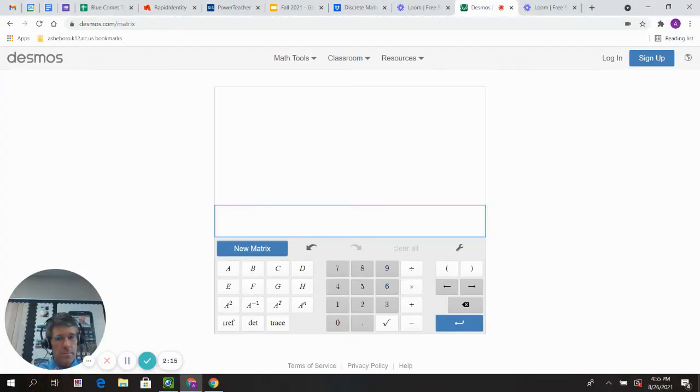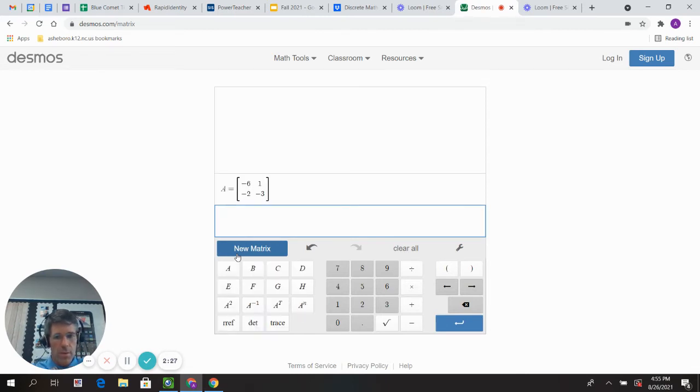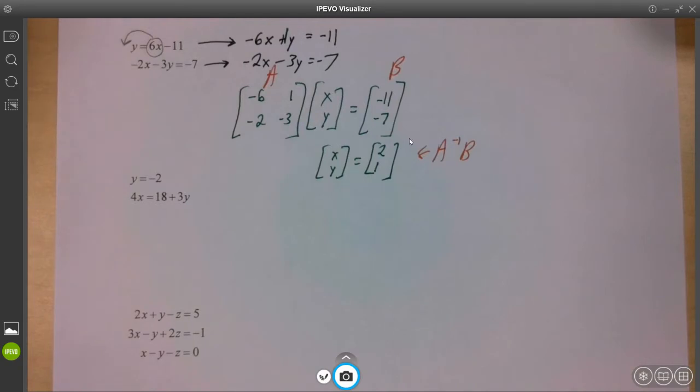My final answer for X and Y is equal to A inverse B, whatever that's going to be. It's going to go right here and that will give us our final answer. Let's go. New matrix. Negative six, one, negative two, negative three. New matrix. Negative eleven, negative seven. And we need A inverse B, two, one. We got it. I'm writing it down. So there it is. Two, one.